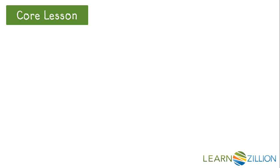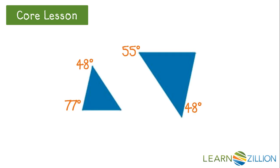For our core lesson, to show that two triangles are similar, we must determine the missing angle measures.